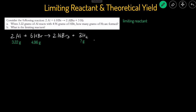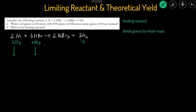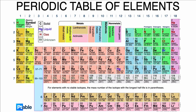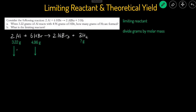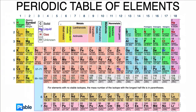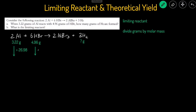The shortcut for these problems: first, convert the grams into moles by dividing the grams by the molar mass of the compound. The molar mass comes from the periodic table. For aluminum, the molar mass is 26.98, so we divide 3.22 by 26.98. The molar mass of HBr is approximately 80.91, so we divide 4.96 by 80.91. This gives us the moles of each reactant.